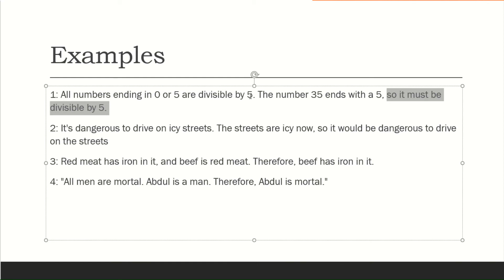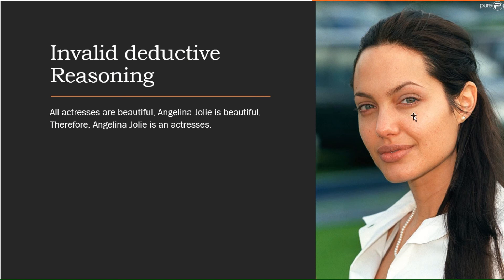Sometimes deductive reasoning gives you an invalid result. For example: premise one — all actresses are beautiful, which is true. Premise two — Angelina Jolie is beautiful, which is true. Conclusion: therefore Angelina Jolie is an actress. This is not necessarily true — not all beautiful people are actresses.